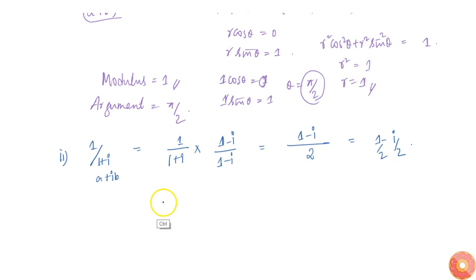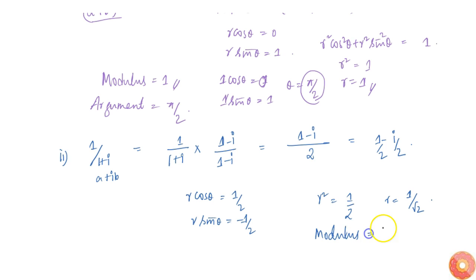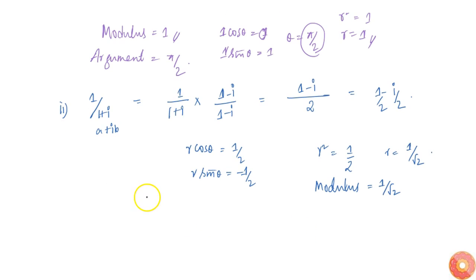Comparing with the polar form equation, we get r cos theta equal to one half and r sin theta equal to minus one half. Squaring and adding them, r squared equals 1 by 4 plus 1 by 4, which is simply 1 by 2. Therefore r equals 1 by root 2, so the modulus is equal to 1 by root 2.